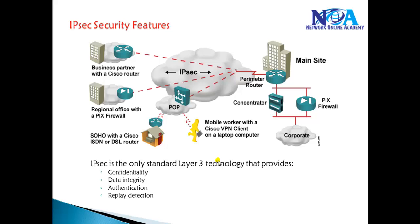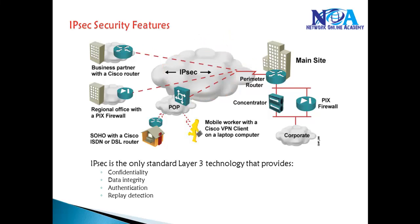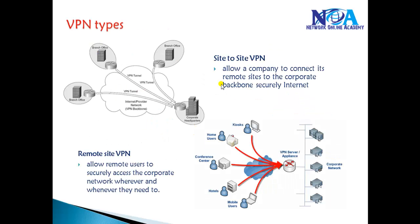These four features — authentication, data integrity, confidentiality, and replay detection — are what IPSec provides, which makes your information as secure as a leased line or dedicated line connection. Even though we are connecting over a public network, we are sending information as securely as if it were on a private network.